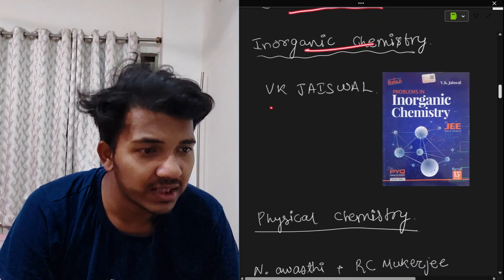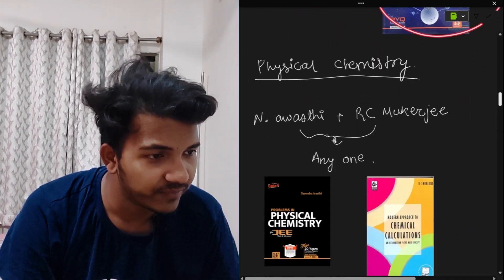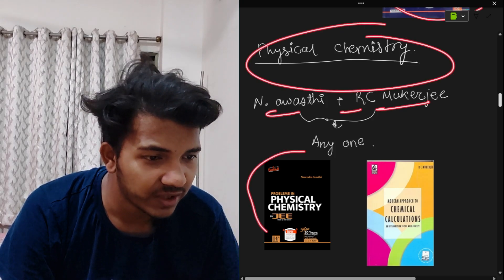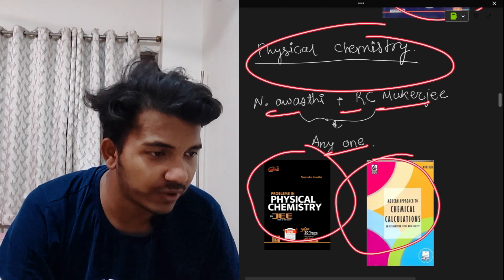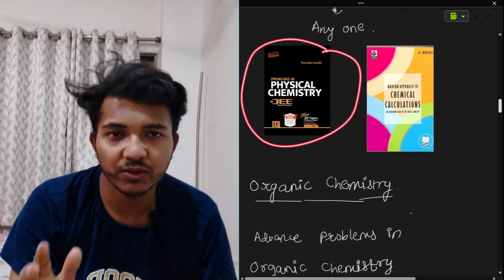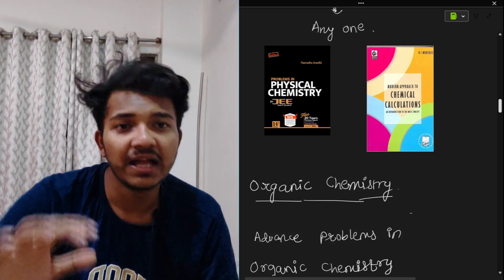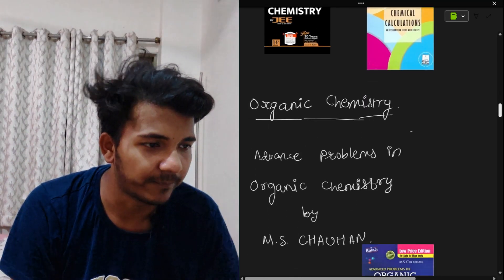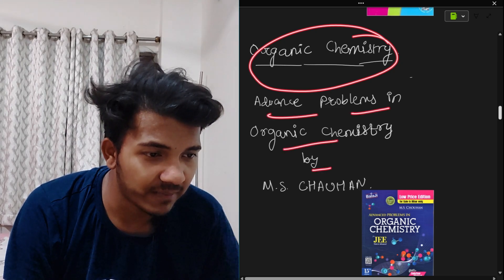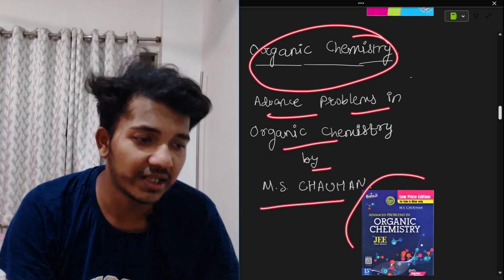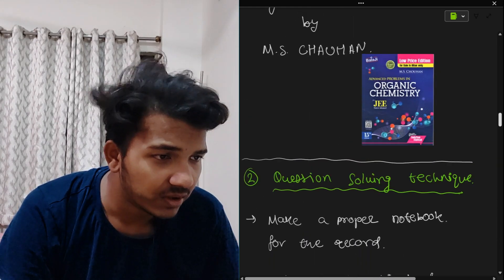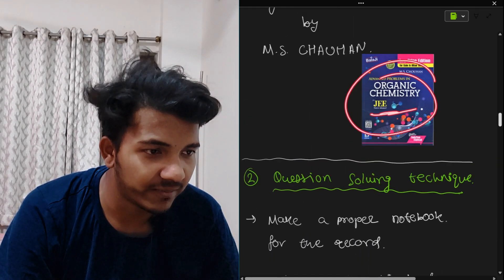For Inorganic Chemistry, VK Jaiswal from Balaji Publications is recommended. For Physical Chemistry, choose either NARST or RC Mukherjee from Balaji Publications — take any one. I always suggest NARST because the questions are given very systematically, level by level, with a large number of questions. For Organic Chemistry, take Advanced Problems in Organic Chemistry by MS Chauhan — get it with your eyes closed. It comes from a reputed publication.